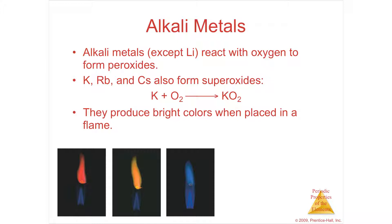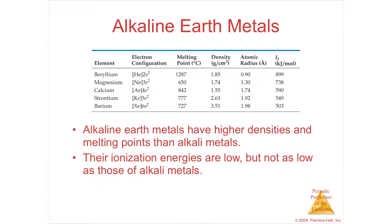When you have these alkali metals — strontiums, rubidiums, potassiums — they're normally very brightly colored. Because that outer electron is sitting out there by itself, it's easily excitable; the electron drops back down and you get all kinds of really cool colors. They're also used in fireworks.